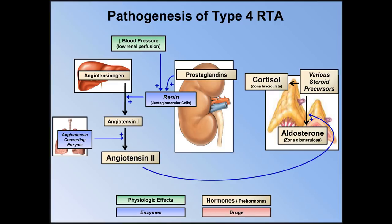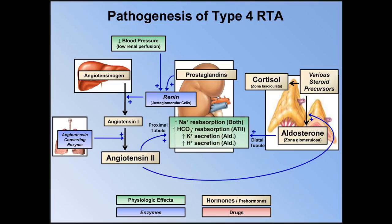Both angiotensin-2 and aldosterone affect acid-base regulation in the kidney. Both hormones increase sodium reabsorption; angiotensin-2 increases bicarb reabsorption, and aldosterone increases both potassium and hydrogen secretion. The net result, as far as acid-base balance is concerned, is a tendency towards metabolic alkalosis. So anything that causes either low renin and/or low aldosterone levels can potentially lead to the opposite — a metabolic acidosis.